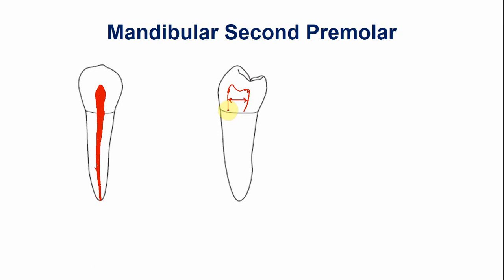In the root portion there is a slight constriction, and the pulp cavity gradually tapers. Usually the apical foramen is at the tip of the root, but sometimes a buccal or lingual apical foramen is also present.